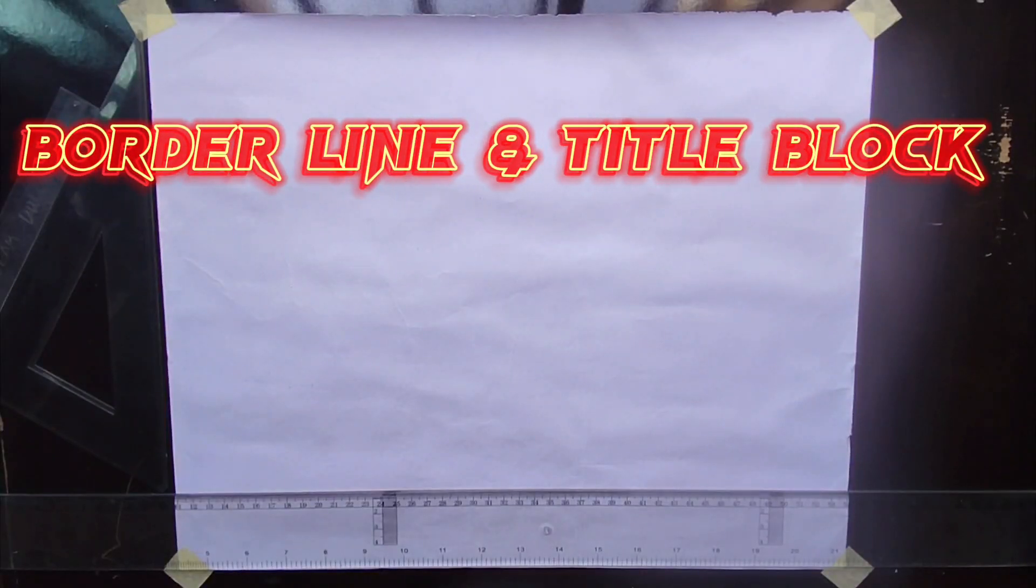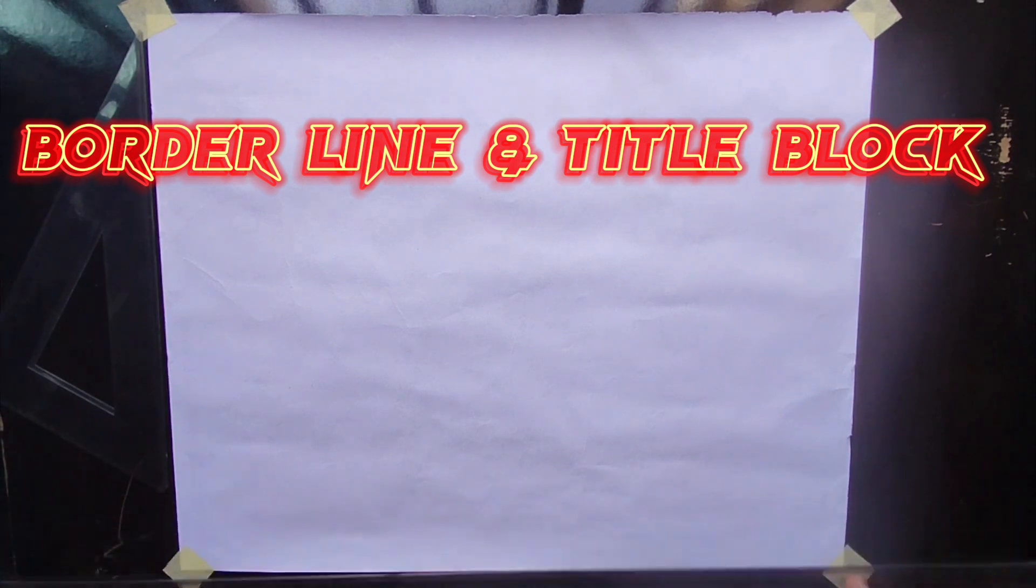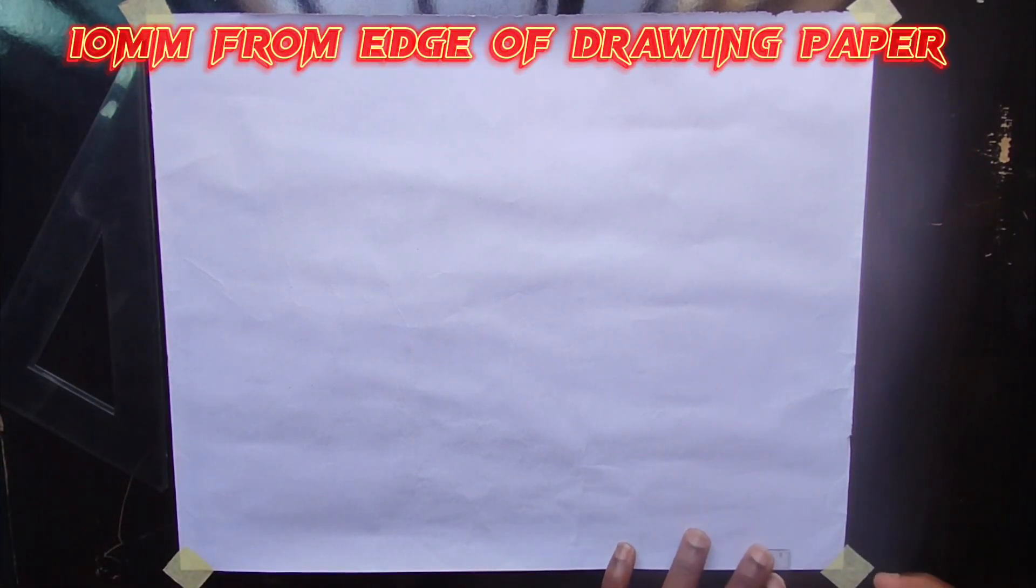In this video I'm going to be showing you how to construct your borderline and your title block. Let's get started. First of all, we are going to be picking 10 millimeter from each edge of the drawing paper.